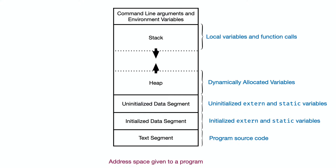In the text segment, I'll show you the code. This is the other segment — the data segment. In this program, there's a variable value in the global scope. There are external variables and static variables. This is the global scope variable in the data segment.